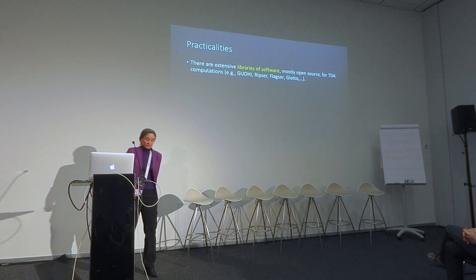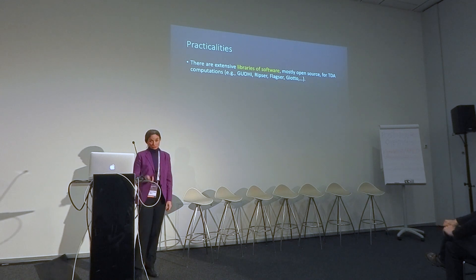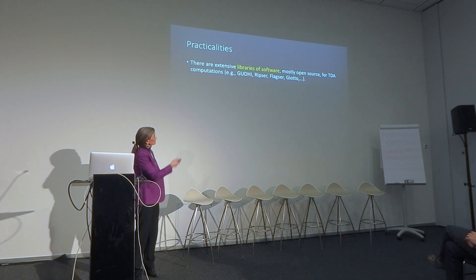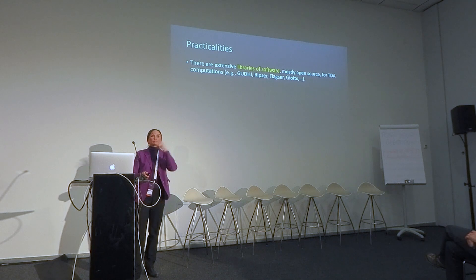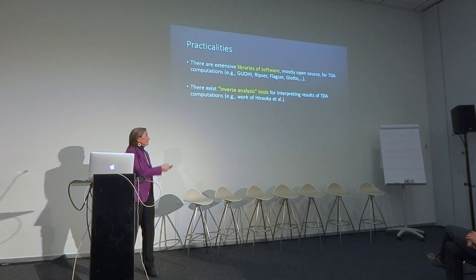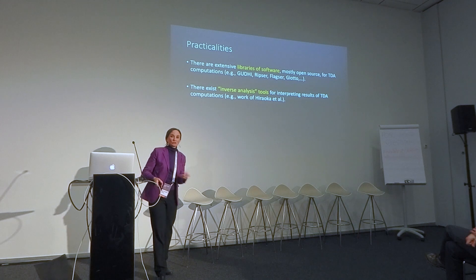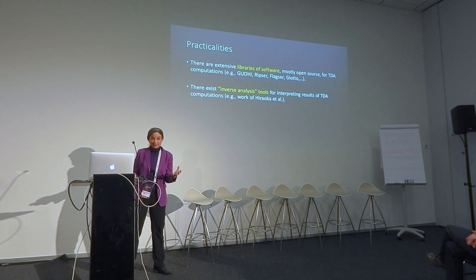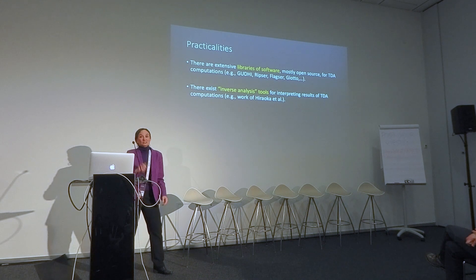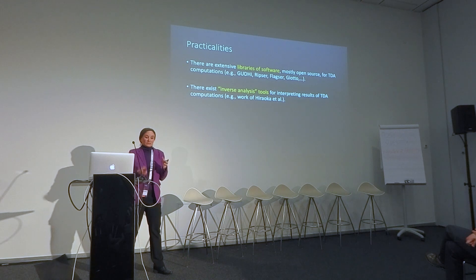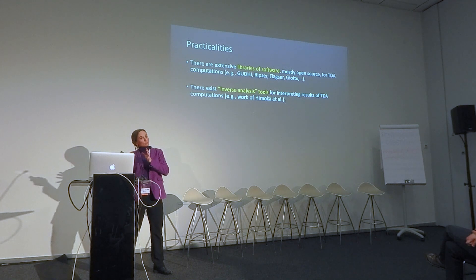If you actually want to do something with this, you need software. There are people who have produced mostly open source software; most notably recently here at EPFL by L2F, they created a beautiful library called Giotto, where you have access to all of these tools for doing all kinds of different topological data analysis computations. And importantly, once you've done this analysis, you'd like to say, what is this topological signature telling you about your original data? There are more and more inverse analysis tools available. In particular, I'd like to cite the work of Yasuo Hirooka, who developed nice ways to take output of TDA and look back at the point cloud and say, where are these significant features coming from?